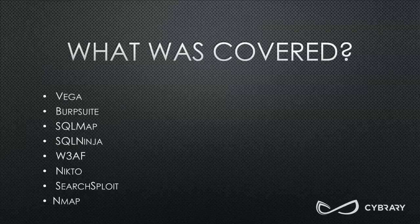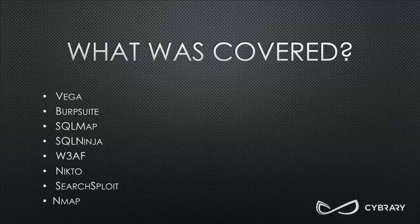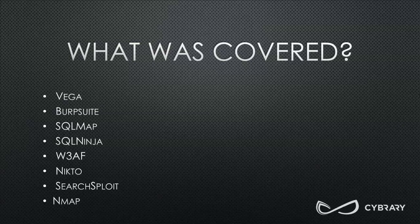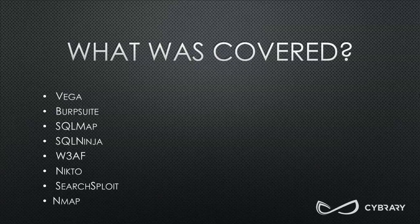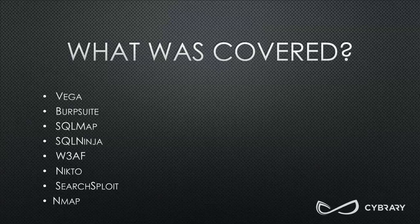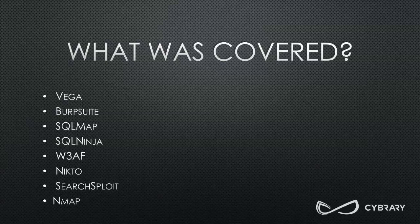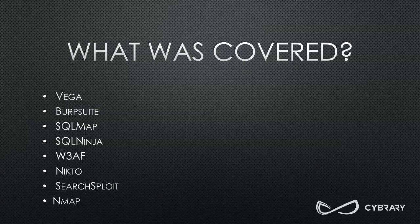So, what was covered? We talked about Vega and Burp Suite, which are both web app vulnerability scanners used for fuzzing and finding vulnerabilities. Then we talked about SQL Map and SQL Ninja, which are used for getting information from databases. We also talked about Arachni, another web application fuzzer with additional built-in tools. We talked about Nikto, used for scanning a server and identifying misconfigurations or blatant vulnerabilities. Then SearchSploit, an exploit database built into Kali Linux. And finally Nmap, a super robust script engine and network scanner. Happy hacking, everyone.